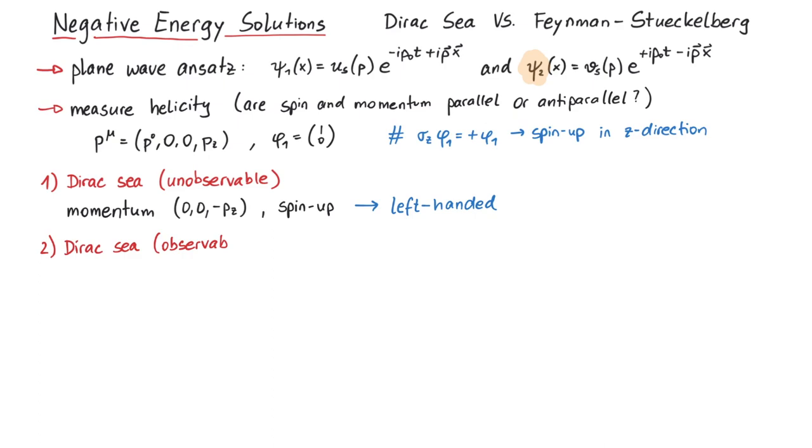Second, the observable positive energy state, which was annihilated from the Dirac-Sea. All properties are flipped compared to the first case. So the momentum is in positive z direction, but the spin is down. It's again antiparallel, therefore left-handed.